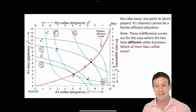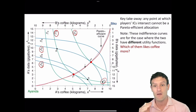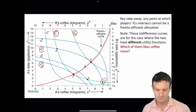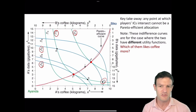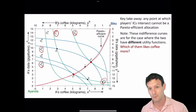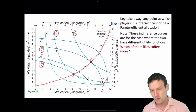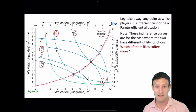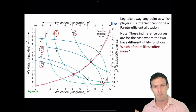So the Pareto efficient curve captures every single point in the Edgeworth box where there are indifference curves that are tangent to each other. For these specific indifference curves drawn for this box, the two players have different preferences — one of them likes coffee more than the other, and one likes data more. Ianda likes coffee more than Biko, and Biko likes data more than Ianda — that's just their preferences.